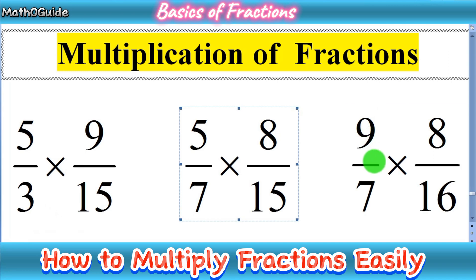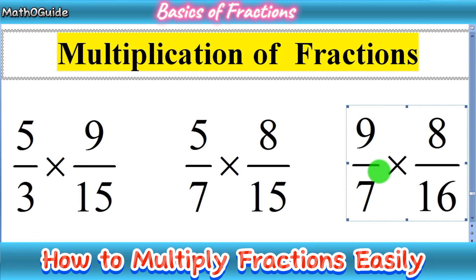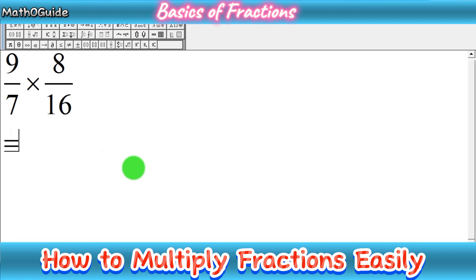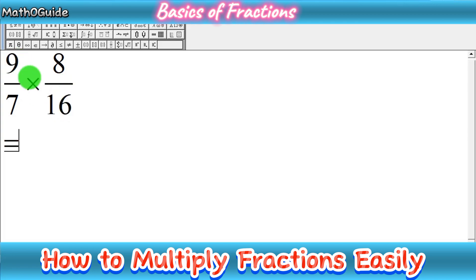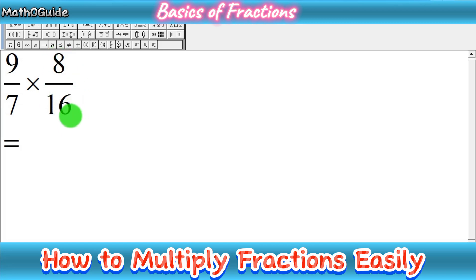Now we move to the third and last type: 9 over 7 multiplied by 8 over 16. First, check if any cross numbers share a common factor — that is, 9 and 16, and 7 and 8. Both of these pairs have no common factor, so we cannot cancel them cross-wise.